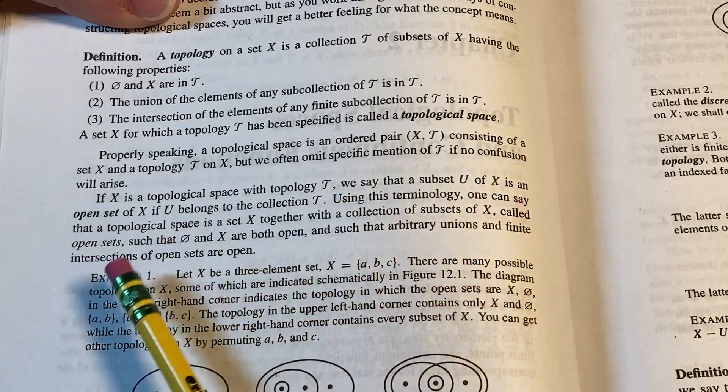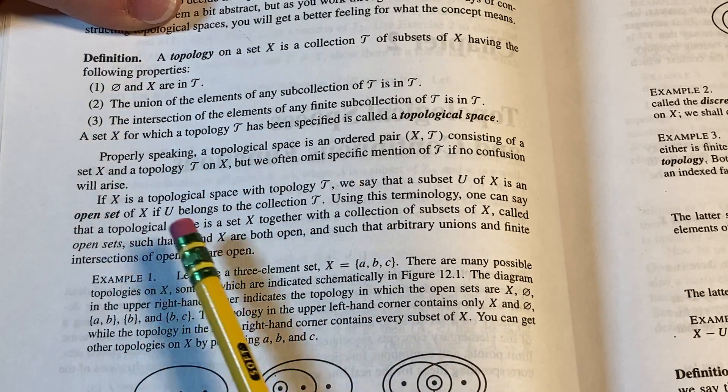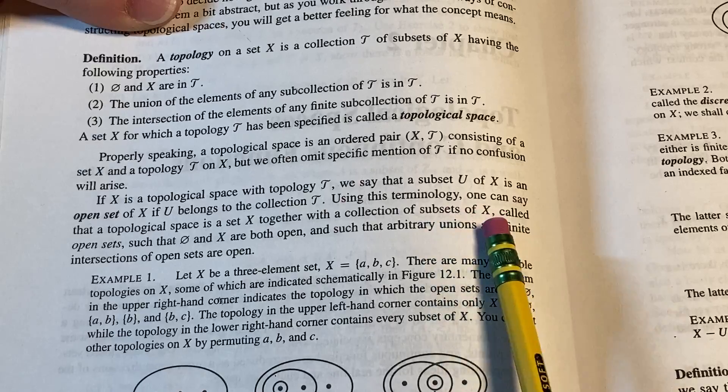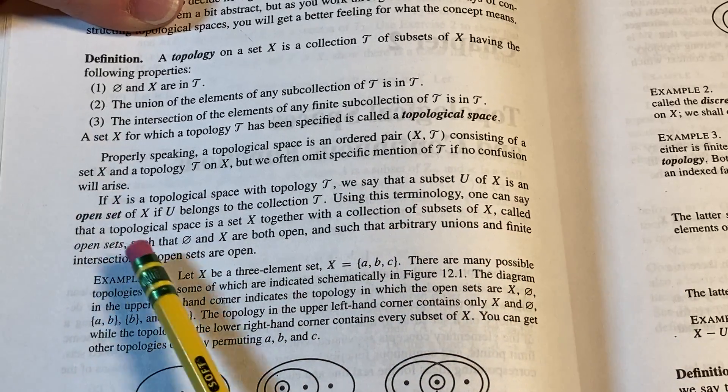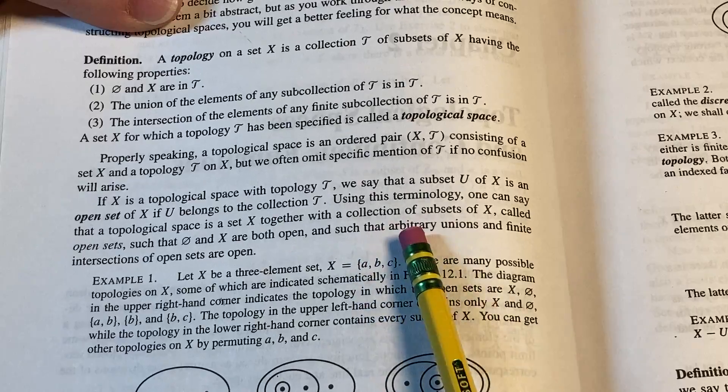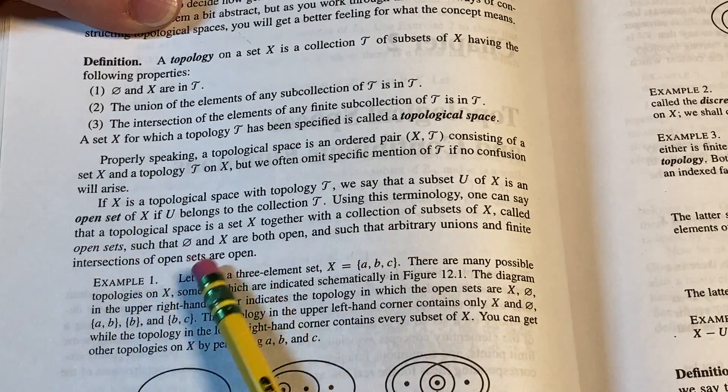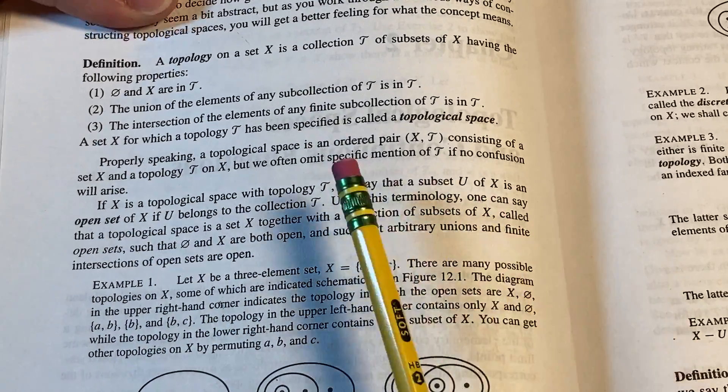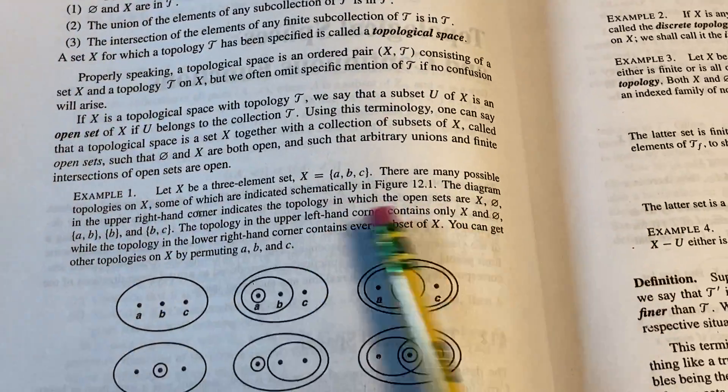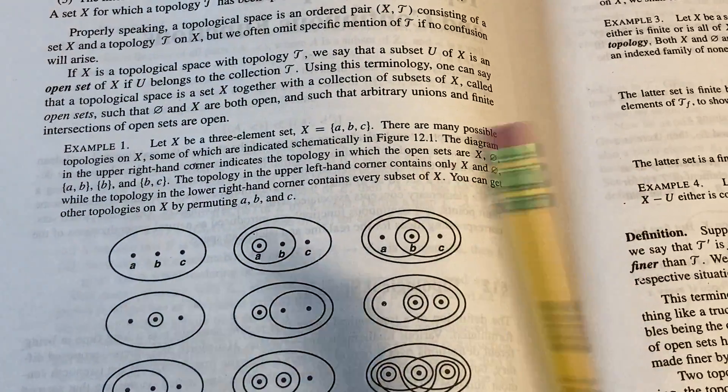Using this terminology, one can say that a topological space is a set X together with a collection of subsets of X called open sets, such that the empty set and X are both open and such that arbitrary unions and finite intersections of open sets are open. Boom. That's the entire definition right there. And then they give you an example here, which I won't go through, but there's an example there. There's another one here.